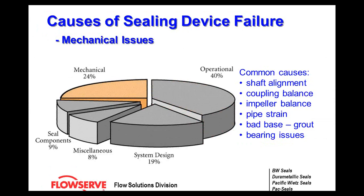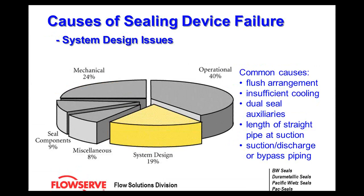Some common causes of mechanical failures: shaft misalignment, coupling balance, impeller balance, and pipe strain. Pipe strain is a hidden killer — you build up a pump, everything is fine, but then in the plant you have to use a come-along to straighten out the pipe runs to get them to bolt up. This imparts a lot of strain into the pump and can cause real havoc with a mechanical seal. A bad base — is it grouted properly, do you have a soft foot, loose bolts — and bearing issues, as tolerances wear out and open up, also lead to mechanical seal failure.